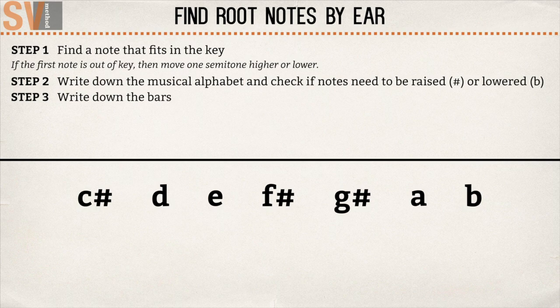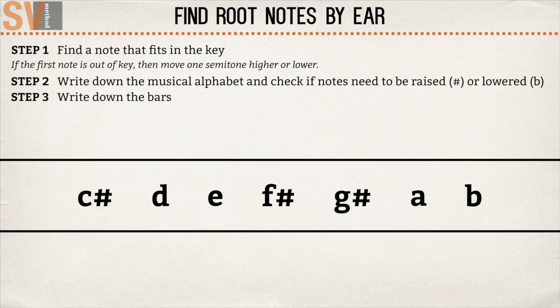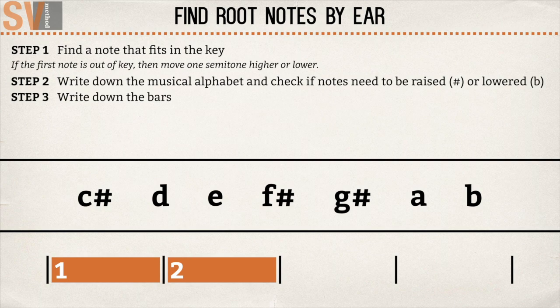Step 3: Write down the bars. In this step, you're going to check out how many bars it takes before the chord progression gets back to the starting point. In this case, it takes 4 bars. You write this down to represent the bars.